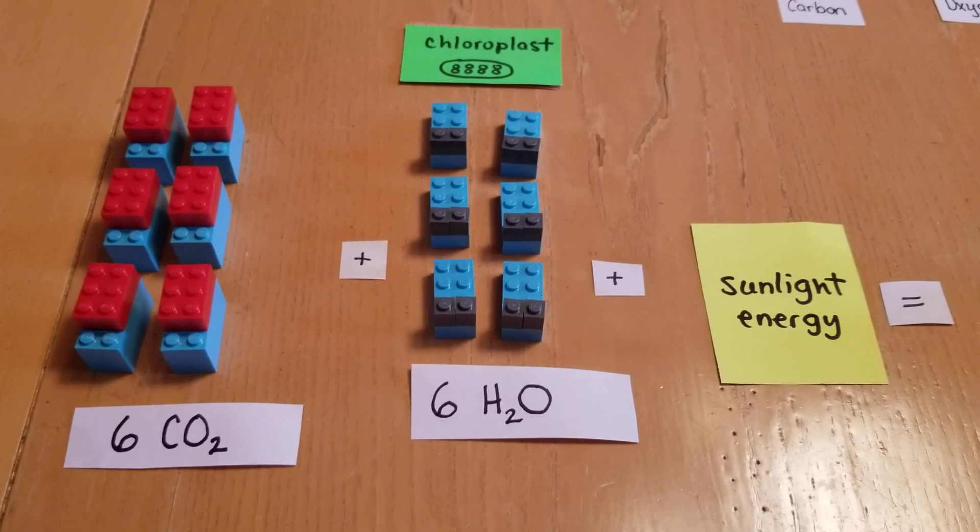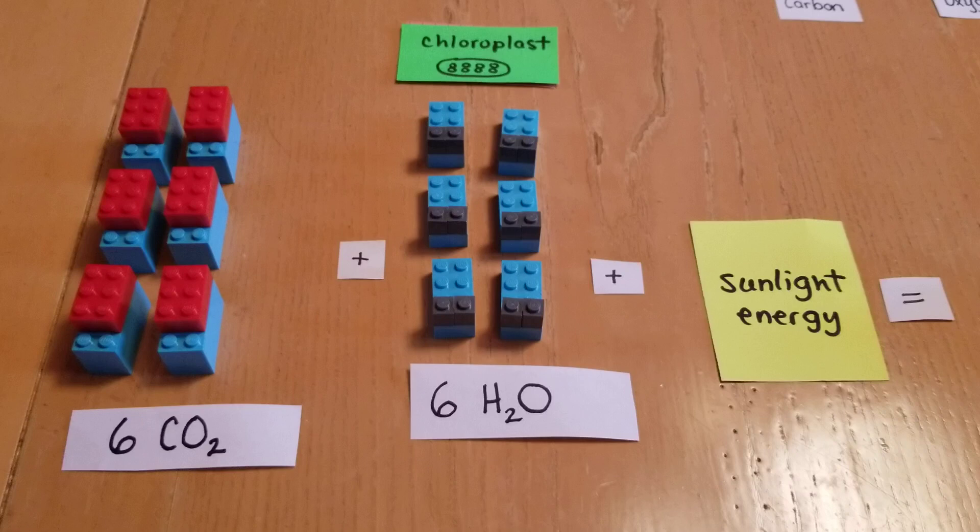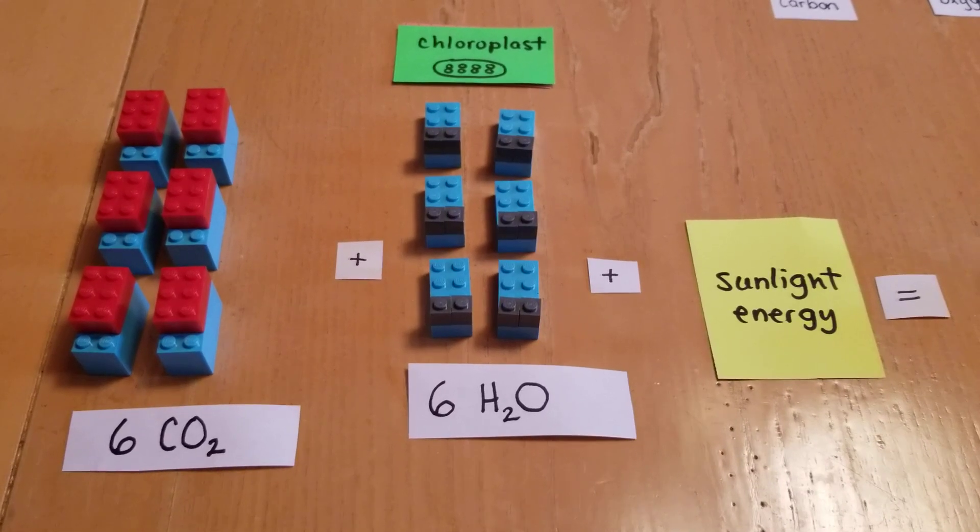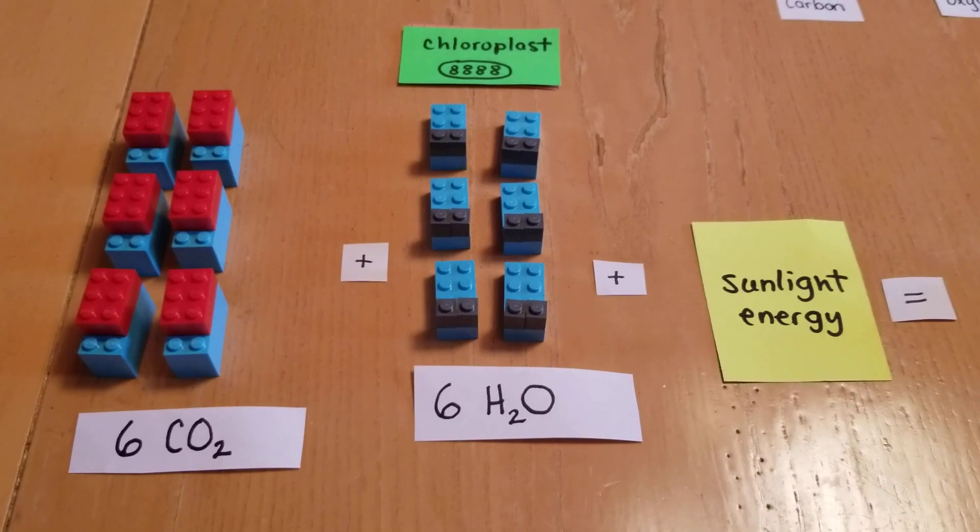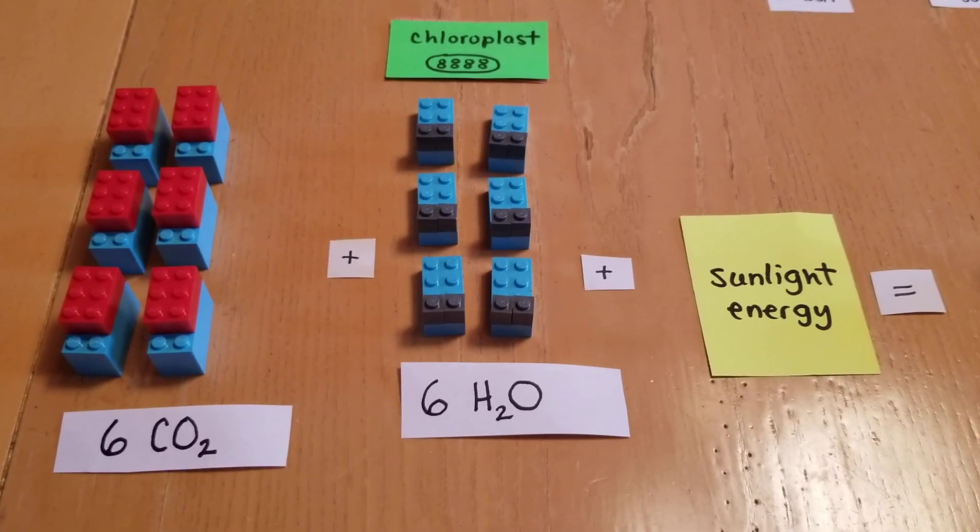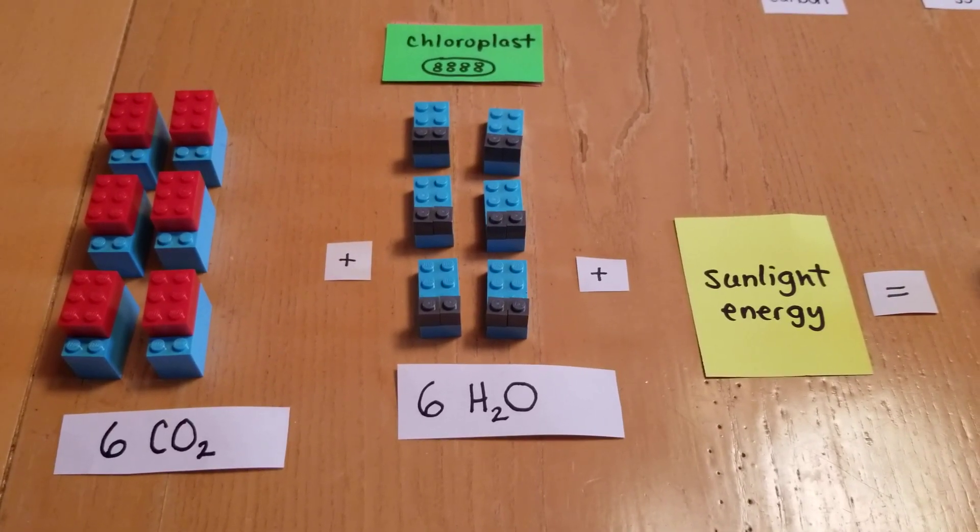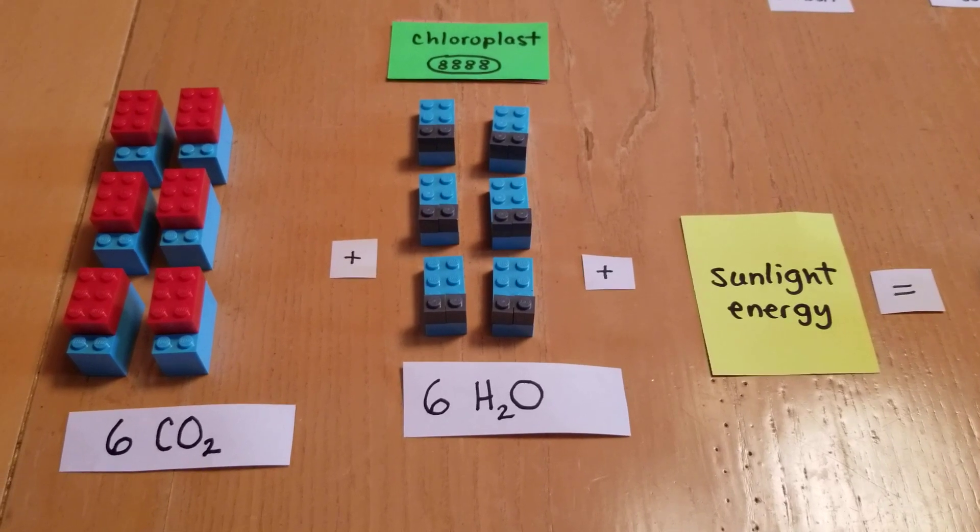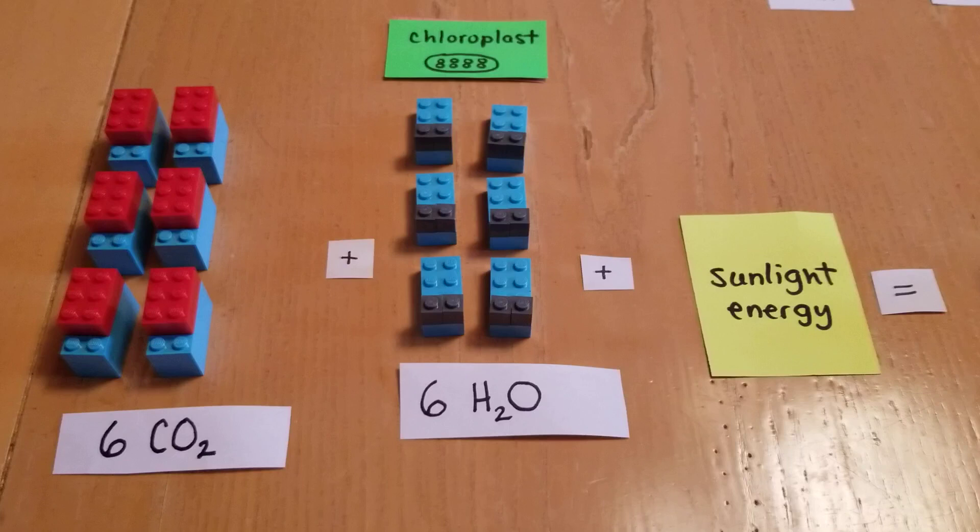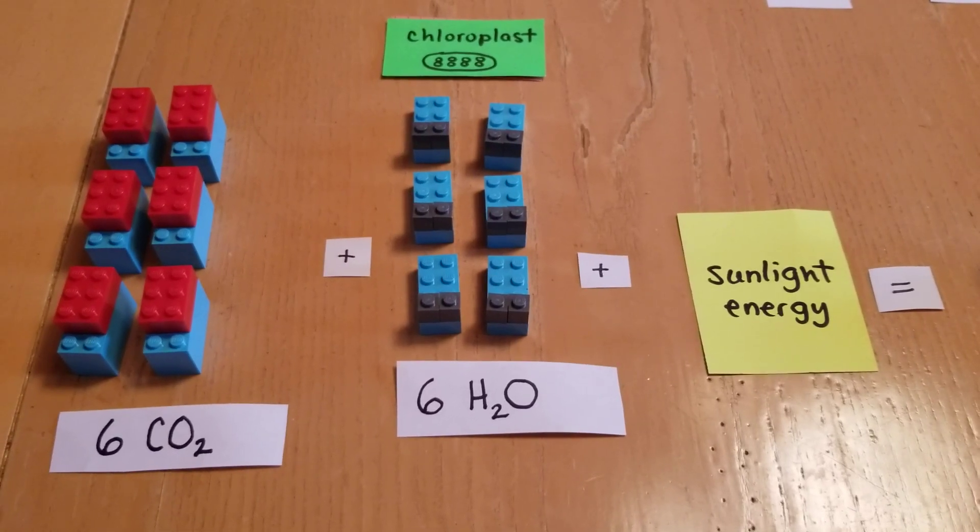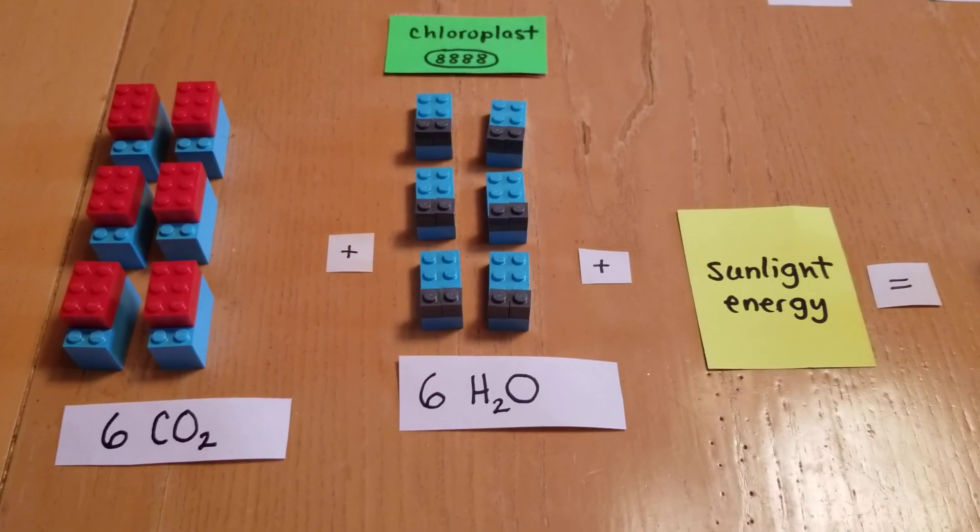And of course, a plant needs sunlight energy, and that's what it does in photosynthesis. It captures that light energy from the sun and chemically changes it into a form that organisms can use. The consumers can use it, and even the plant itself can use it, but it has to use it in a chemical form.